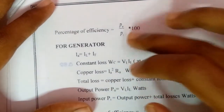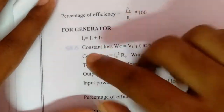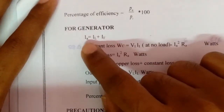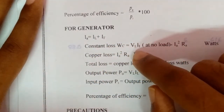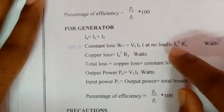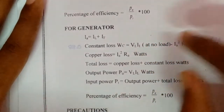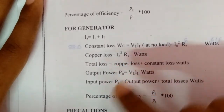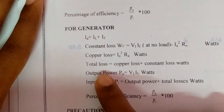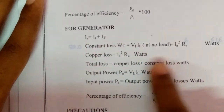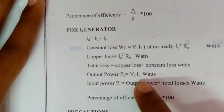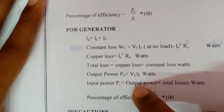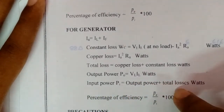The percentage efficiency equals output power divided by input power. For the generator, the formula will be: armature current IA equals IL plus IF. Constant loss WC equals VL × IL at no load minus IA-squared × RA. Copper loss equals IA-squared × RA. Total loss equals copper loss plus constant loss. Output power P0 equals VL × IL. Input power P equals output power plus total loss watts.